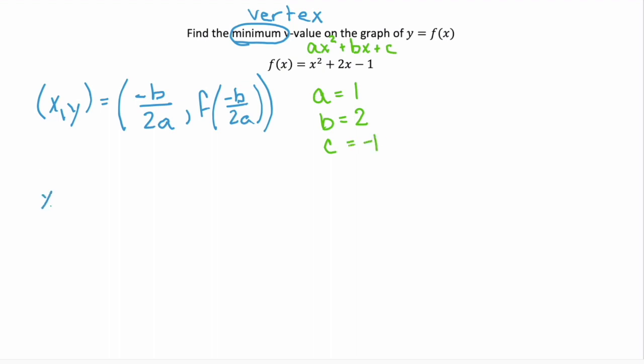Now we can just substitute those in to negative b over 2a in order to find the x value. So our x value is going to be negative 2 over 2 times 1. That simplifies to negative 2 over 2, which is negative 1.